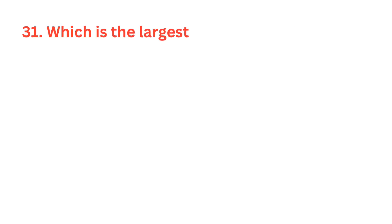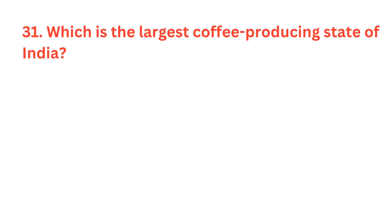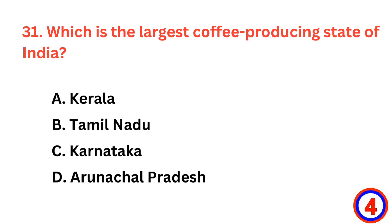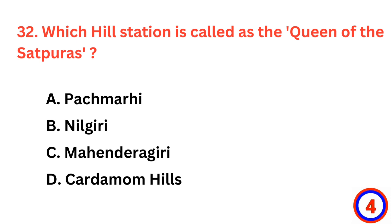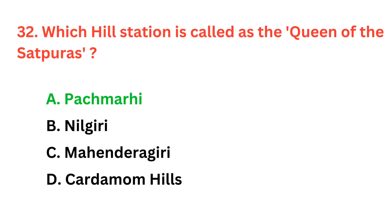Which is the largest coffee producing state of India? The correct answer is option C, Karnataka. Which hill station is called the queen of the Satpuras? The correct answer is option A, Pachmarhi.